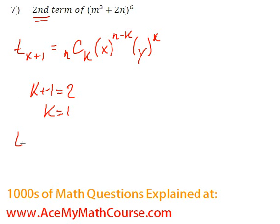So we're looking for t₂ equals nCk. Because our n is 6, k is 1, so nCk times the first term, which is m³ to the power of 6-1, times 2n to the power of k, which is just 1.